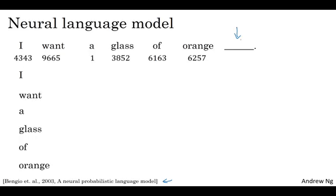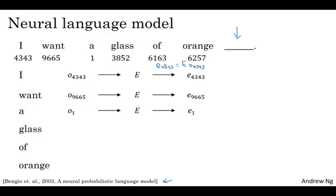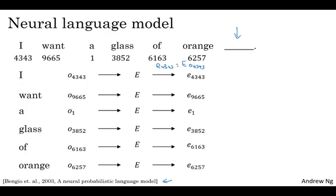Let me take the list of words. I want a glass of orange. And let's start with the first word I. So I'm going to construct a one-hot vector corresponding to the word I. So there's a one-hot vector with a one in position 4343. So this is going to be a 10,000 dimensional vector. And what we're going to do is then have a matrix of parameters E, and take E times O to get an embedding vector E4343. And then we'll do the same for all of the other words. So the word want is word 9665. So we take that one-hot vector multiplied by E to get the embedding vector. And similarly for the other words.